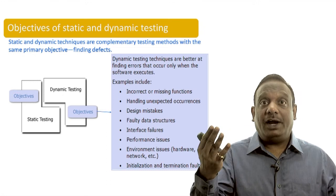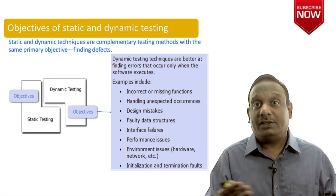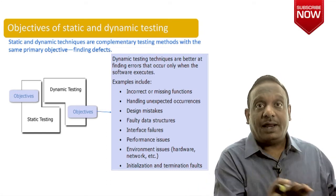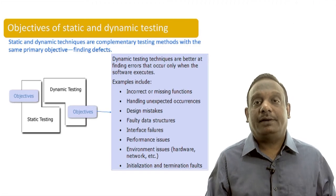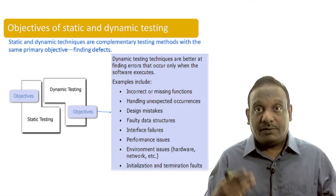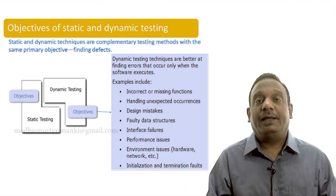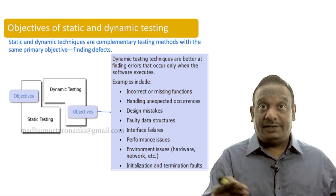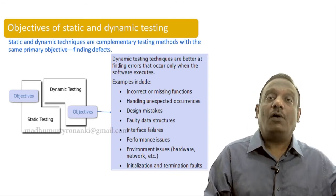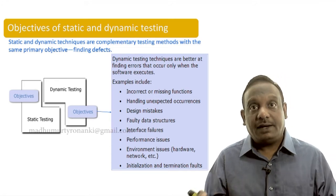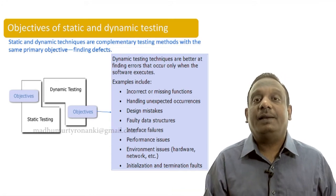Handling unexpected occurrences. Whenever divide by zero happening, then whether software is crashing or they have been handled in an appropriate manner. Those kind of things can be found by the time of execution. Also, design mistakes, they can be found by static testing and they can be found as well in dynamic testing.